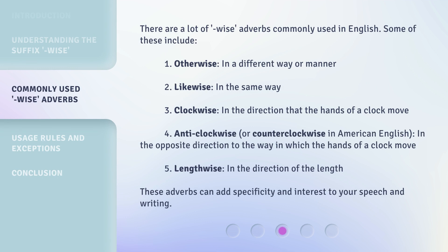There are a lot of '-wise' adverbs commonly used in English. Some of these include: one, 'otherwise' — in a different way or manner; two, 'likewise' — in the same way; three, 'clockwise' — in the direction that the hands of a clock move; four, 'anti-clockwise', or 'counterclockwise' in American English — in the opposite direction to the way the hands of a clock move; five, 'lengthwise' — in the direction of a length. These adverbs can add specificity and interest to your speech and writing.